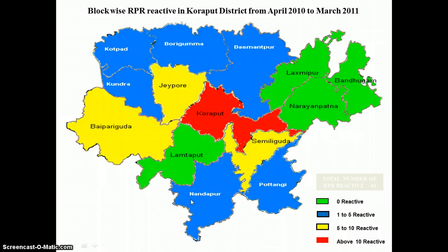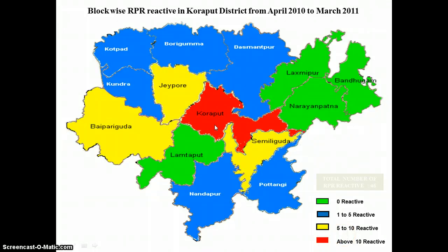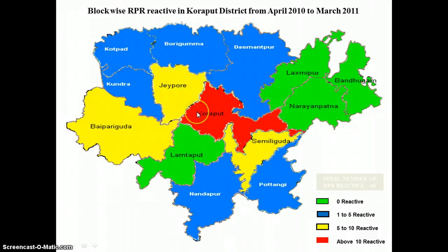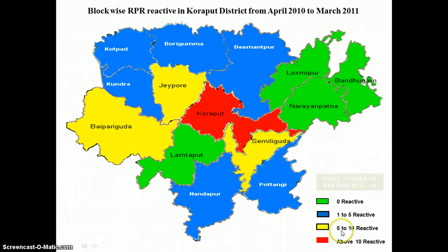This is the block-wise map of RPR reactivity in Koraput district. Most of the RPR reactive cases are in Koraput district headquarters, where we also have the DSRC, so that should not be a concern. However, apart from Koraput, Jayapur, Vaipari Guda, and Simdiguda have also shown RPR reactive cases of between 5 to 10 cases.